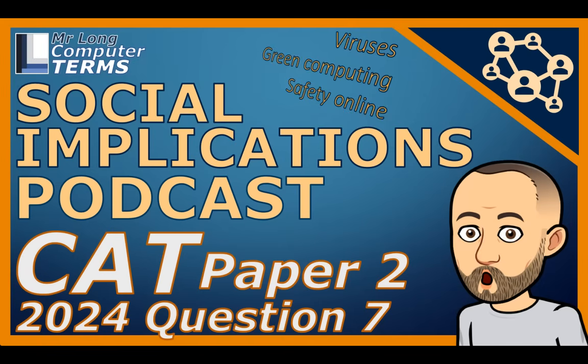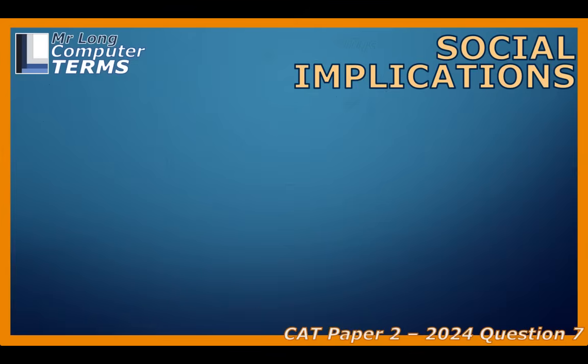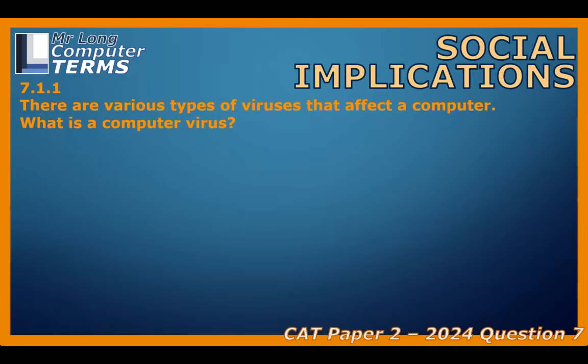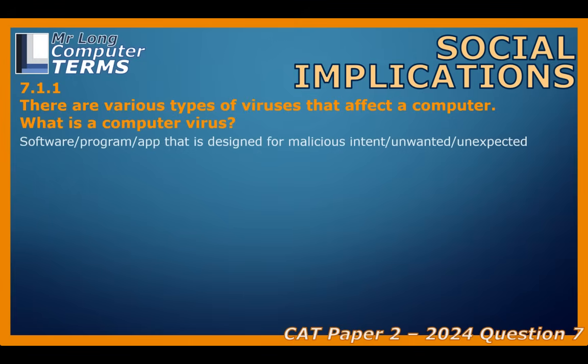Let's start with a term we've all heard: computer virus. A computer virus is essentially a piece of software — like a program or an app — that's specifically designed with malicious intent. It's unwanted, it's unexpected, and it's definitely not there to help you. These aren't just abstract threats; they have very real, noticeable impacts on how your computer actually works.